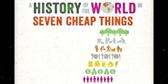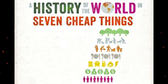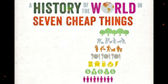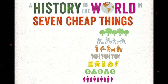At the same time as tracing the links between the seven cheap things, the authors fill out the history of cheapness — that is, the history of the Capitolocene. They argue that the Capitolocene era began with European colonial expansion in the 16th century.